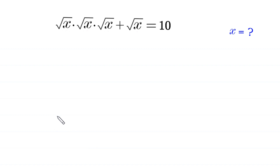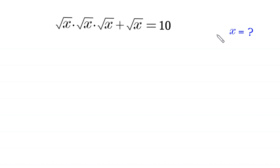Hello, welcome to how to solve this very nice radical equation: root x times root x times root x plus root x is equal to 10. We need to find all possible values of x.